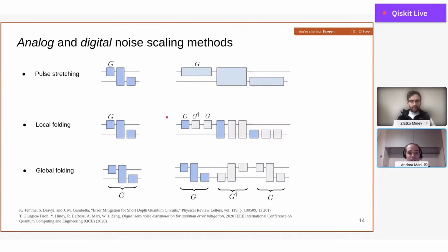In principle, you can also do this in a digital way. Without acting on the physical control pulses, you can try to increase the effective length of the circuit by compiling the input circuit with a larger number of gates.